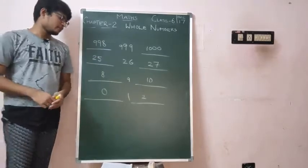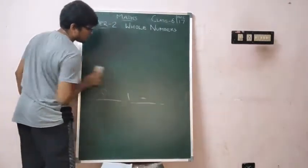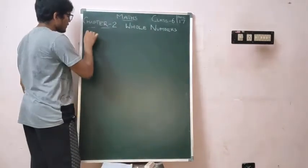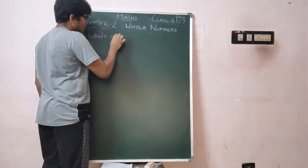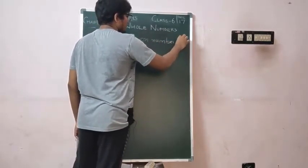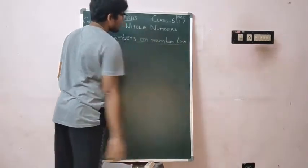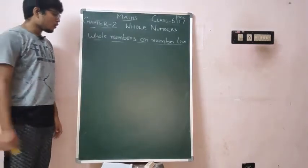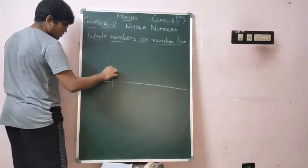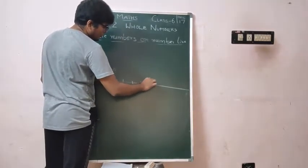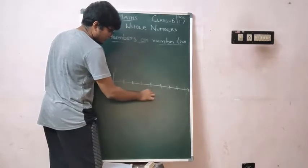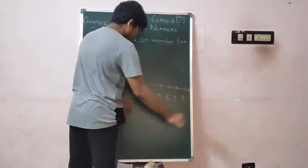Is this clear? Can we go to the next topic? The next topic is whole numbers on the number line. The number line captures all our numbers. So on the number line we have 0, 1, 2, 3, 4, 5, 6, 7, 8, 9, 10, and so on.